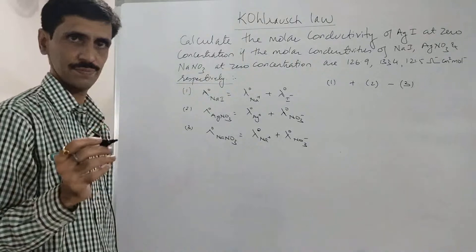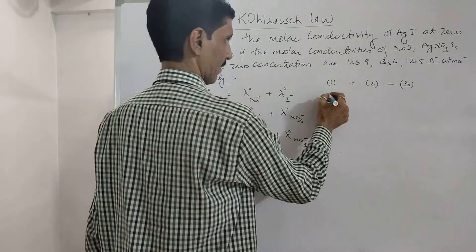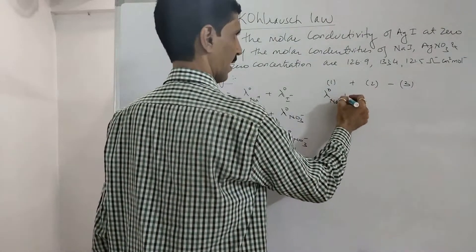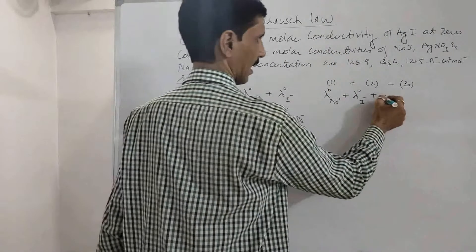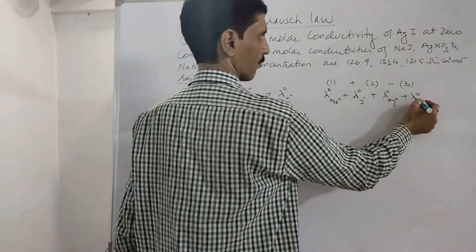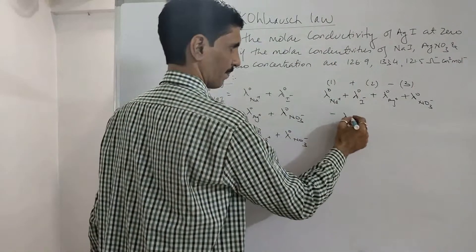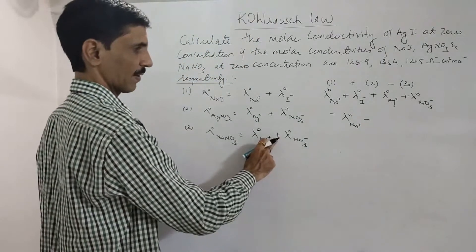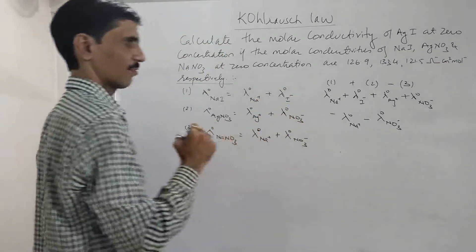Let's check it out. Taking equation 1 plus equation 2 minus equation 3 on the right-hand side, we get: λ⁰(Na⁺) + λ⁰(I⁻) + λ⁰(Ag⁺) + λ⁰(NO₃⁻) minus λ⁰(Na⁺) minus λ⁰(NO₃⁻). The minus sign from equation 3 means this plus becomes minus for the NO₃⁻ term.